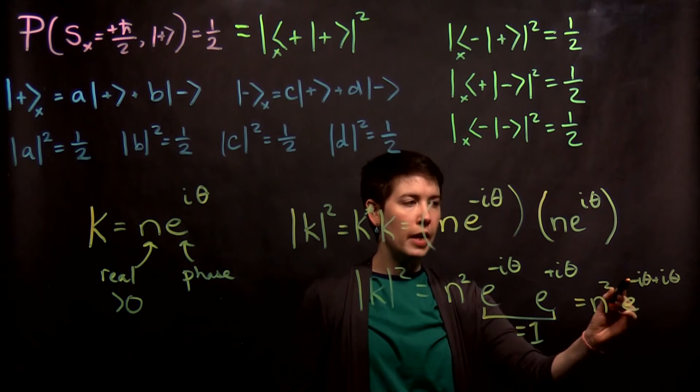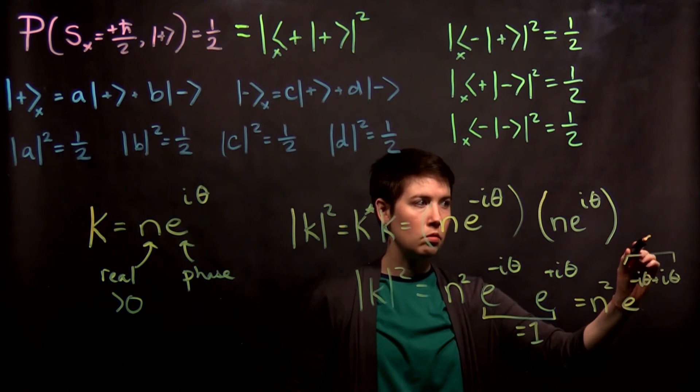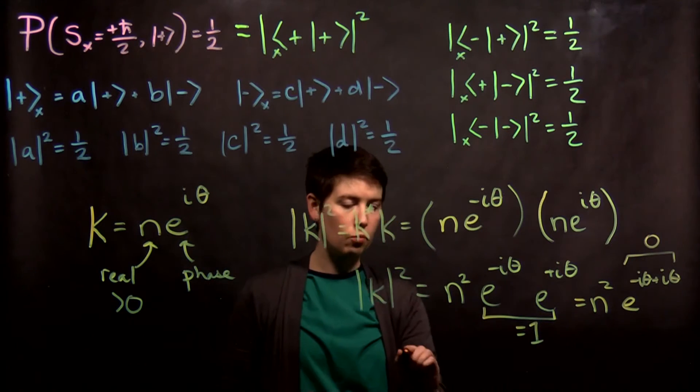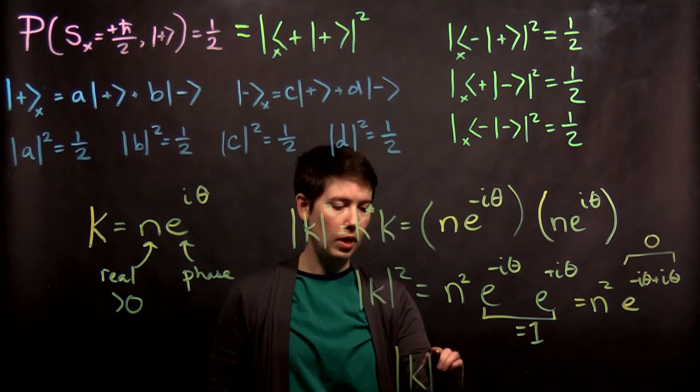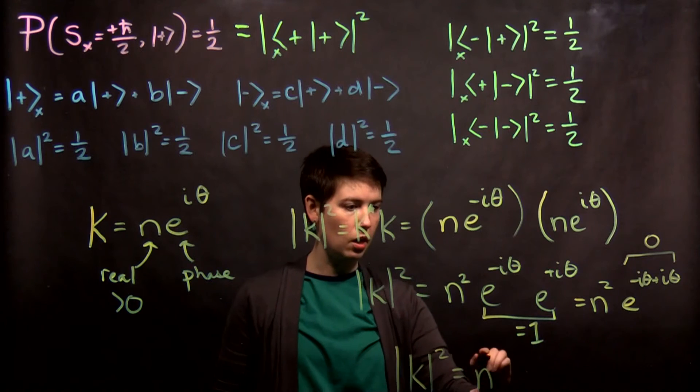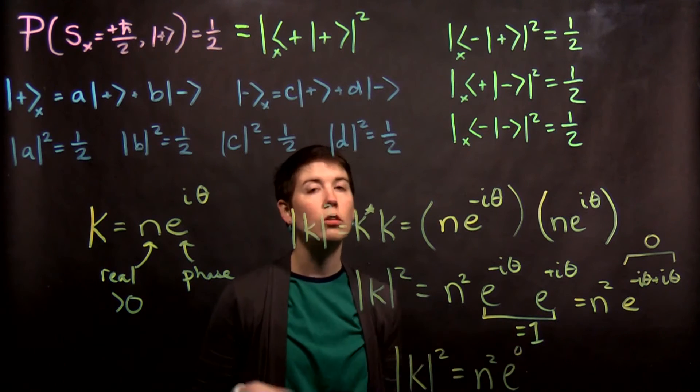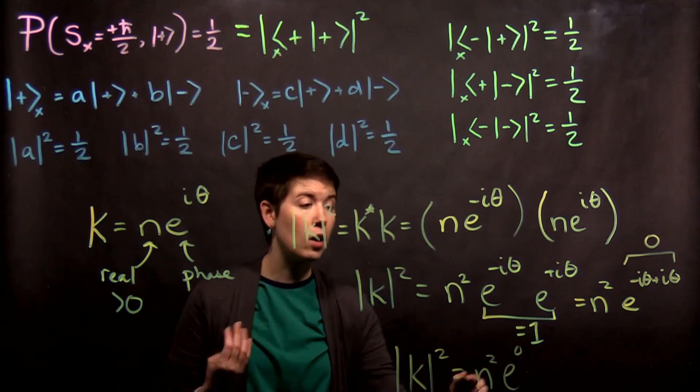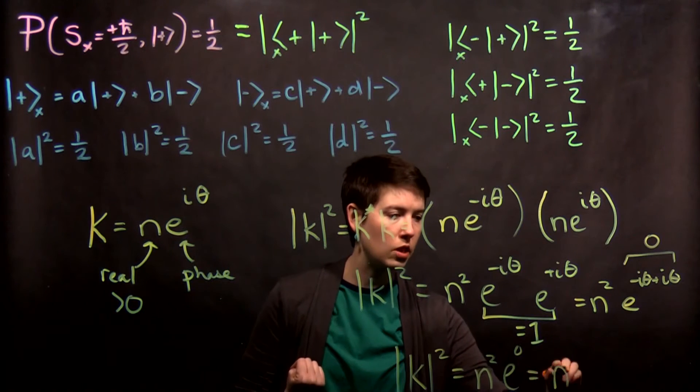Well, so what is this? Negative i theta plus i theta is 0. So we could write this as magnitude of k squared is equal to n squared e to the 0. What is e to the 0? It's just 1. So we get here that it's n squared.